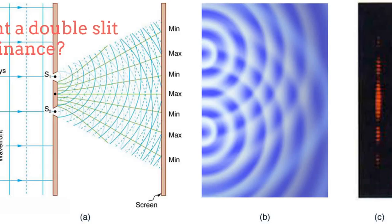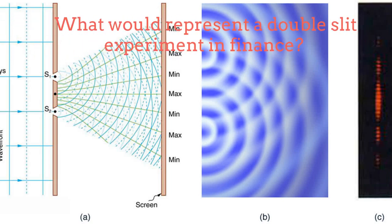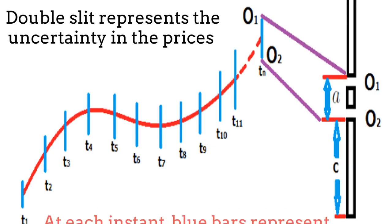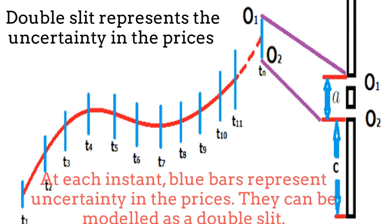Another application of quantum mechanics in the stock market is the implementation of the double slit experiment. A double slit would represent the uncertainty in the prices of the stock or option under analysis. At each instant we have some uncertainty in the prices, which we can model as a double slit. The upper slit represents the largest possible price and the lower slit represents the lowest possible price at some specific instant.